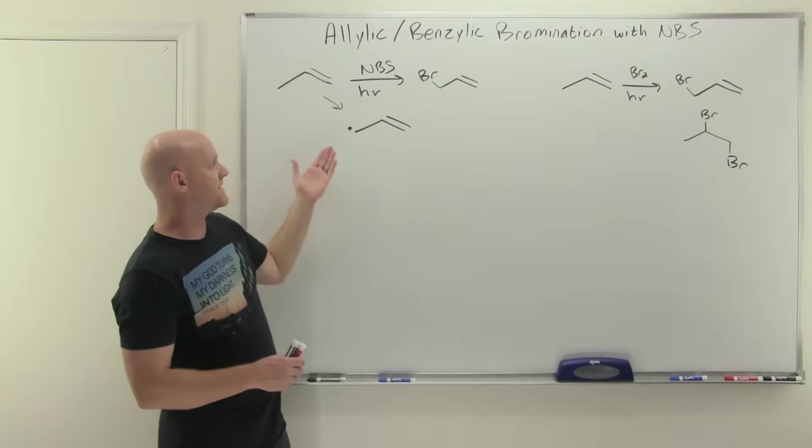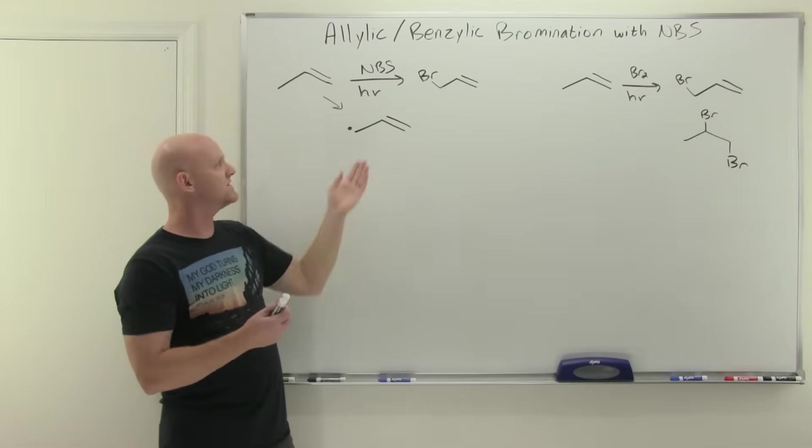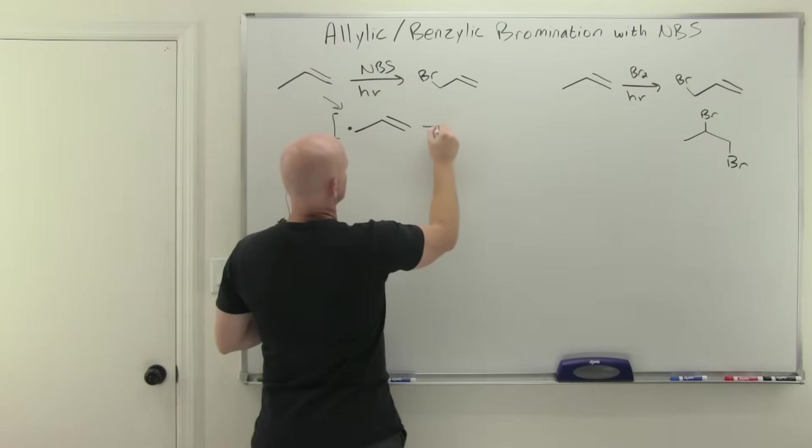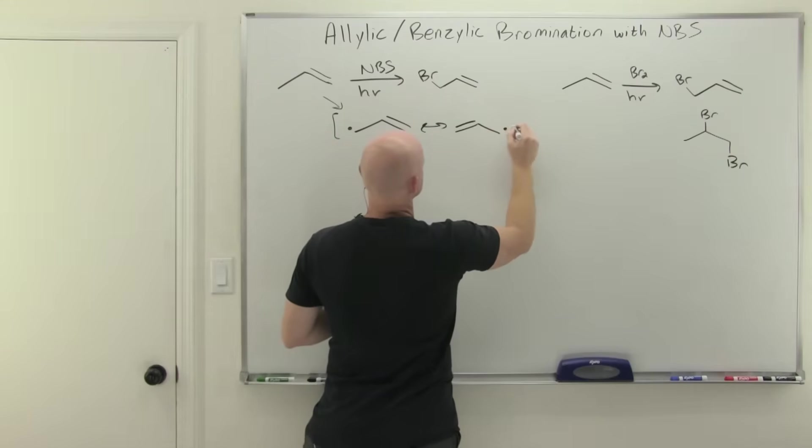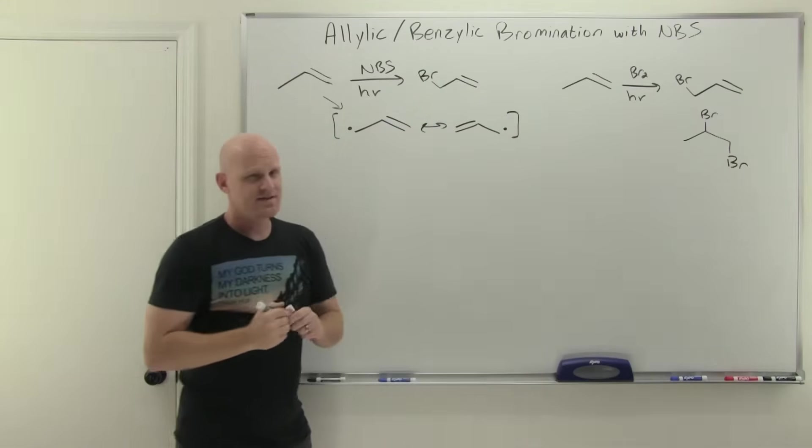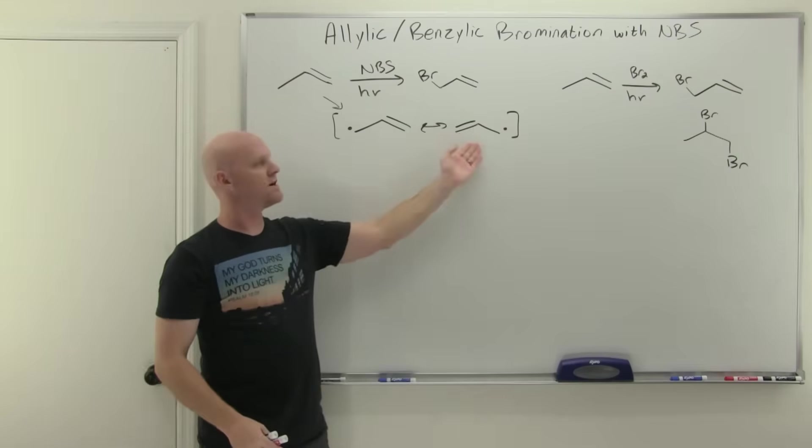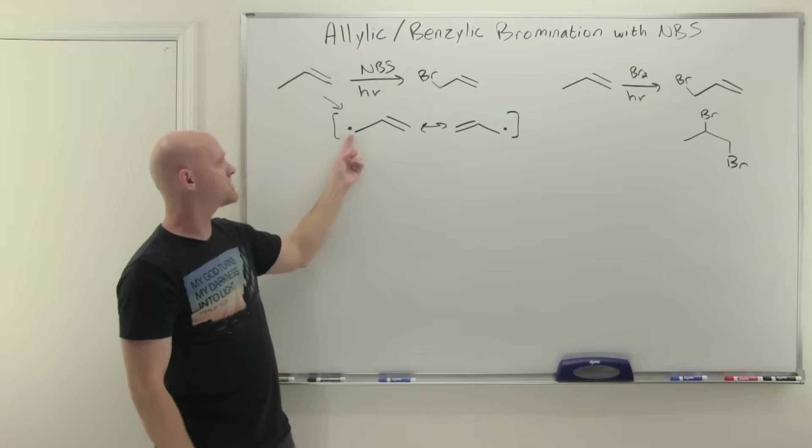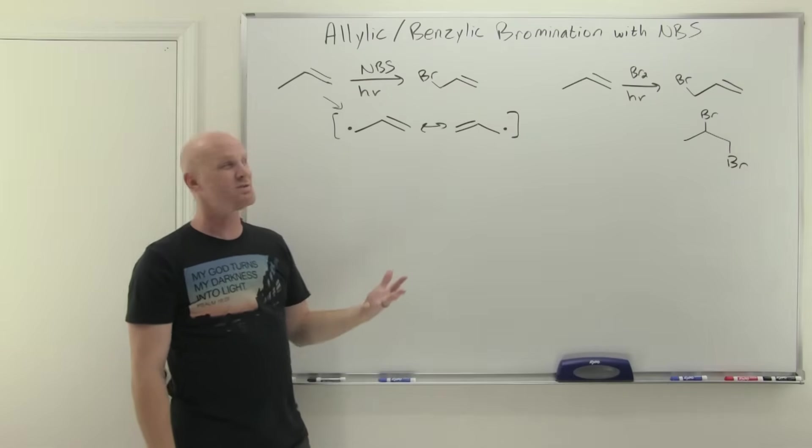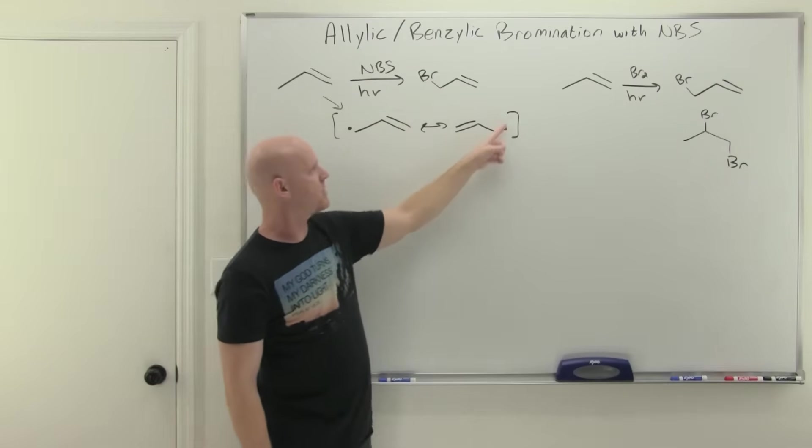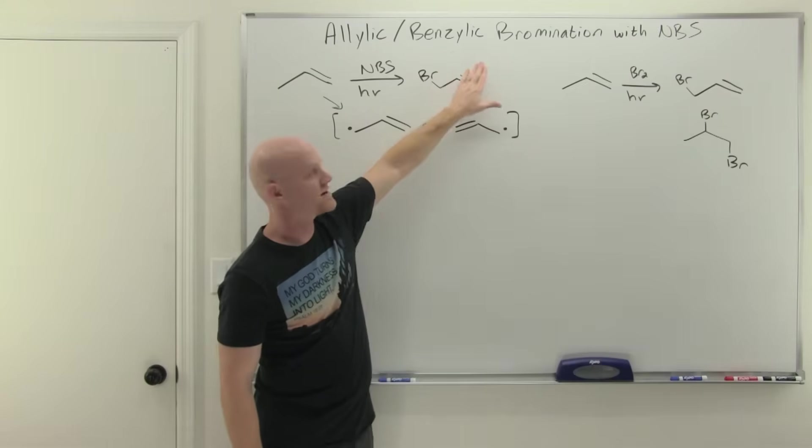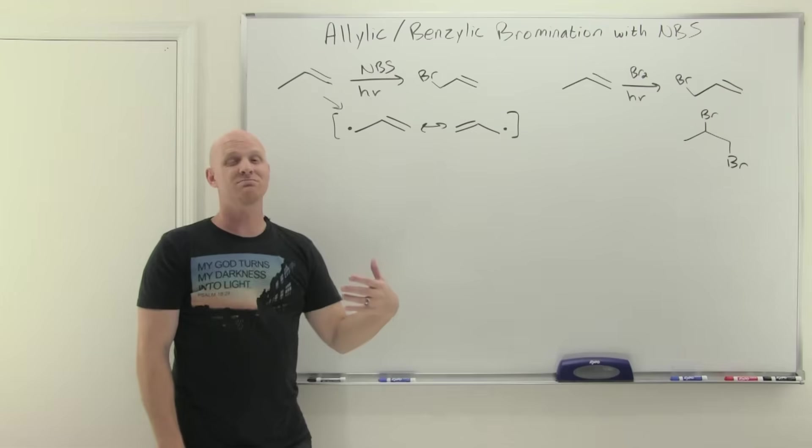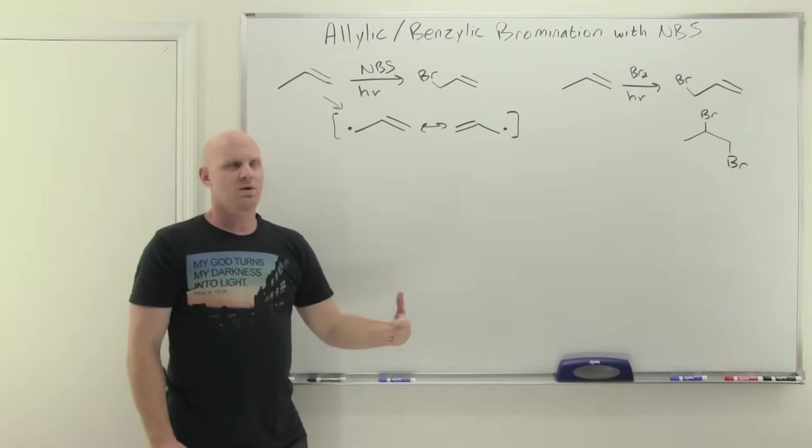Now, one other thing I want to focus on here. We talked about this lovely resonant stabilized radical that we form, and I want to draw both resonant structures here. And this thing is symmetrical. It doesn't matter which of these two lovely radical resonant structure you use. You could brominate on this carbon, or you could brominate on this carbon, but due to the symmetry, it would lead you to the exact same product.